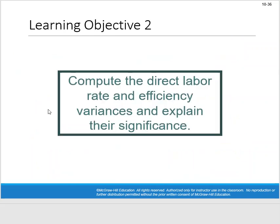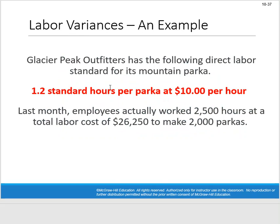Next we look at labor: the labor rate variance (price variance) and labor efficiency variance (quantity variance). Back to Glacier Peak Outfitters — their direct labor standard for the mountain parka is 1.2 standard hours per parka at $10 per hour. Last month, employees actually worked 2,500 hours at a total labor cost of $26,250 to make 2,000 parkas. Before we proceed: 2,000 parkas × 1.2 standard hours = 2,400 hours standard, but we worked 2,500 — 100 hours too many.